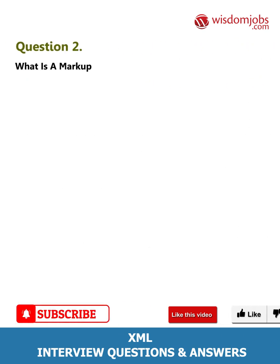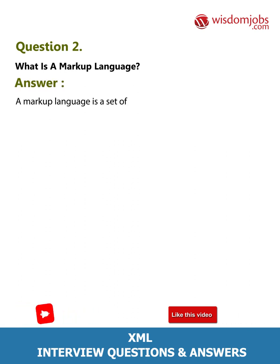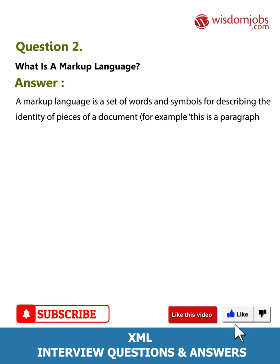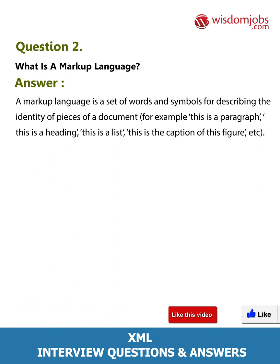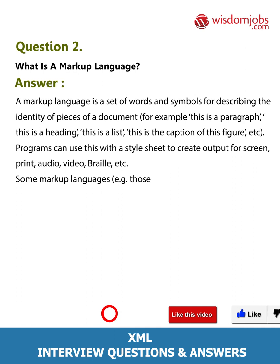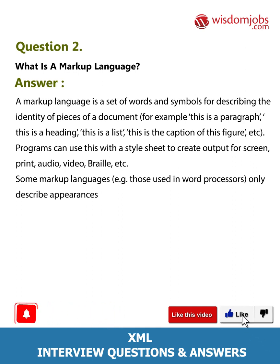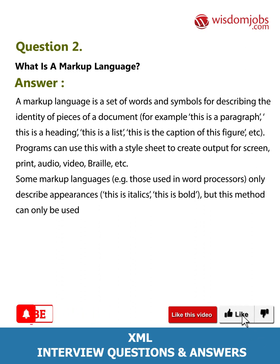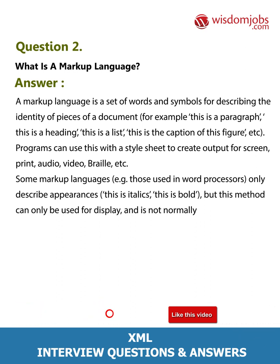Question 2: What is a markup language? Answer: A markup language is a set of words and symbols for describing the identity of pieces of a document — for example, this is a paragraph, this is a heading, this is a list, this is the caption of this figure. Programs can use this with a style sheet to create output for screen, print, audio, video, braille, etc. Some markup languages, for example those used in word processors, only describe appearances such as italics or bold.